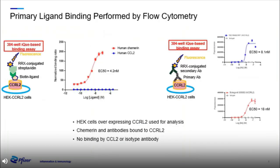The initial work looking at ligand binding to CCRL2 was performed using a high-throughput flow cytometry assay. Cells were plated into a 384-well plate, biotinylated ligands were added, followed by secondary agents. The data shows binding of chemorin to CCRL2 expressed on overexpressing cells — a really nice binding curve with an EC50 in the nanomolar range. Notably, CCL2 does not show binding in this particular assay. Antibodies were also evaluated: the commercial reagent from R&D Systems and the BioLegend antibody both showed binding to CCRL2 with very nice EC50s, while the isotype control antibody showed no binding.